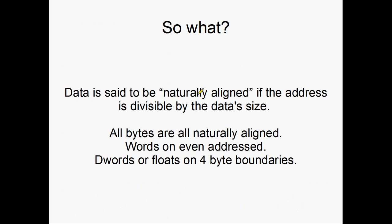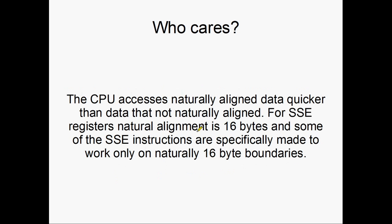Natural alignment: something is said to be naturally aligned if the address that it's on is evenly divisible by the data's size. Natural alignment for bytes is anything, since bytes are one byte long and everything is divisible by one — so all bytes are naturally aligned. Words on even addresses are said to be naturally aligned. D-words, or floats — single precision floating point numbers — are naturally aligned on 4-byte boundaries. Q-words on 8-byte boundaries, D-Q-words on 16-byte boundaries, et cetera. The CPU accesses naturally aligned data quicker than not naturally aligned data. For SSE registers, or for 128 bits — which is the size of the SSE registers — natural alignment is 16 bytes. They're D-Q-words, double-quad-words, so 16 bytes.